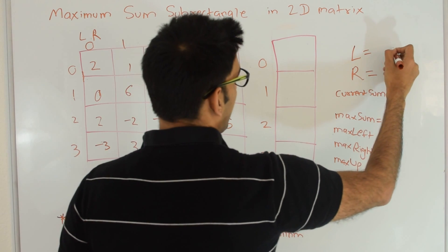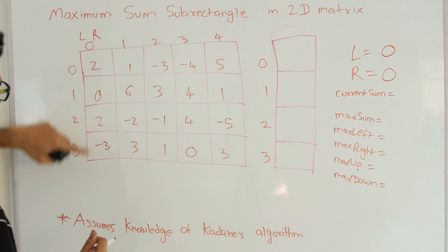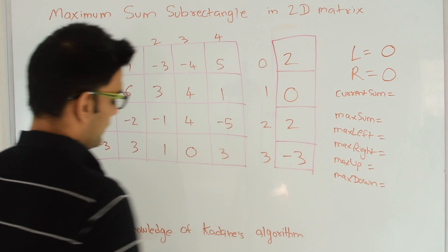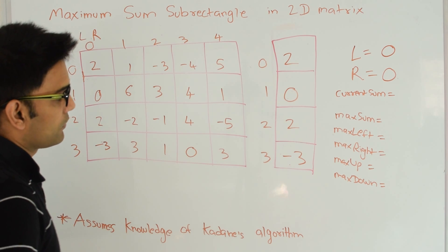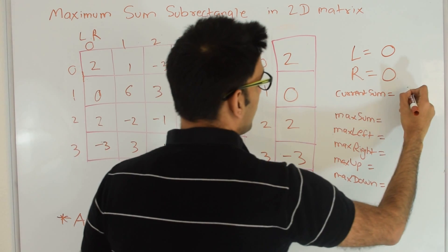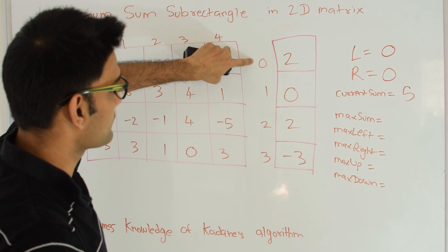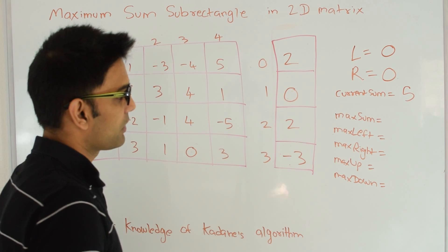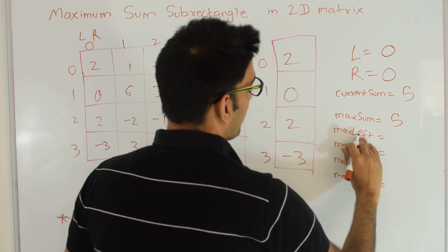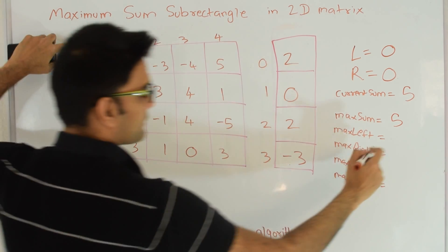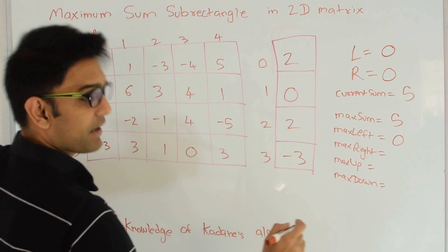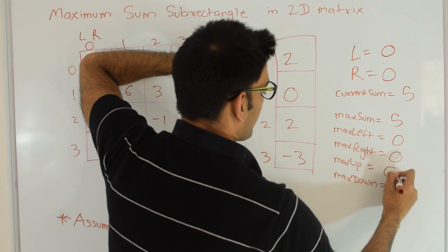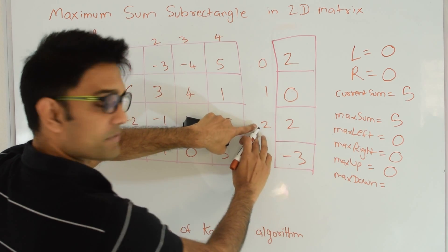Initially left=0, right=0. We copy column 0 into the temporary array: 2, 0, 2, -3. Applying Kadane's algorithm gives maximum sum 5, starting at index 0 and ending at index 2. Since current sum 5 is greater than the initial maximum sum, max sum becomes 5. Max left=0, max right=0, max up=0, max down=2.